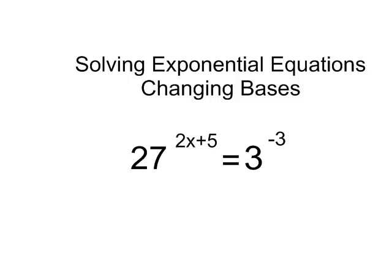We're going to be solving some exponential equations, and in this case we need to change bases so the bases are the same so we can equate the exponents. Now we have 27 to the exponent 2x plus 5 is equal to 3 to the exponent negative 3.